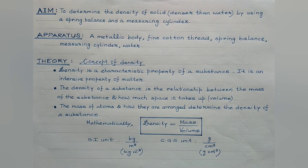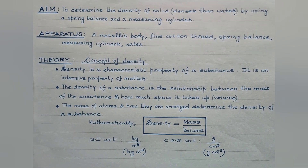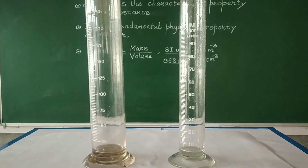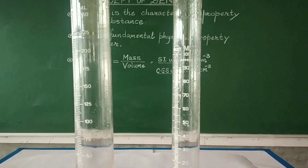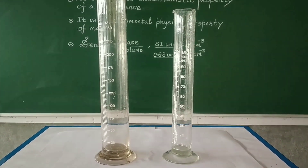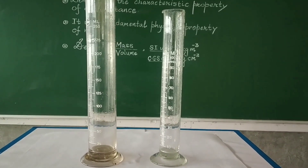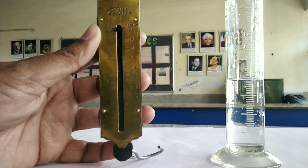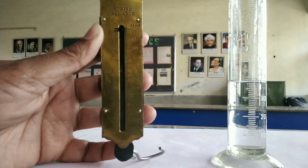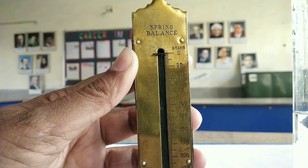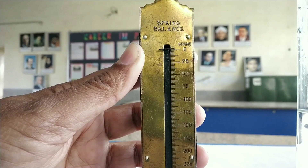Let us understand the procedure of doing this particular experiment. These are the two measuring cylinders; we are supposed to make use of any one of them. A measuring cylinder is a hollow glass cylindrical jar with a heavy flat bottom and uniform cross-section, marked along its height. This is a spring balance — it consists of a special spring enclosed in a metallic case having a slit cut at the center along the length of the spring.